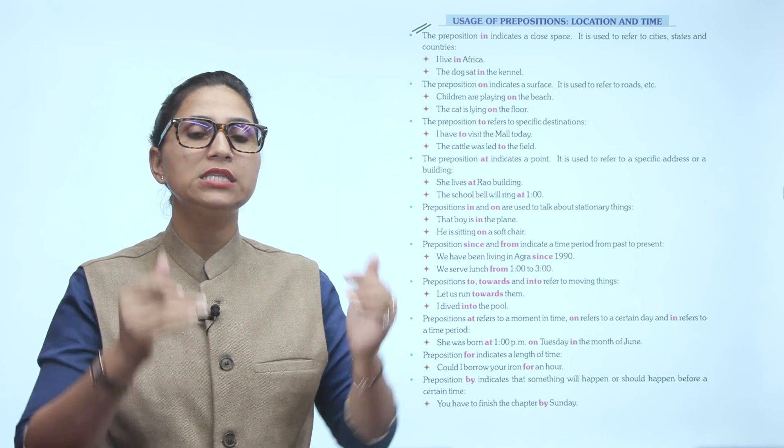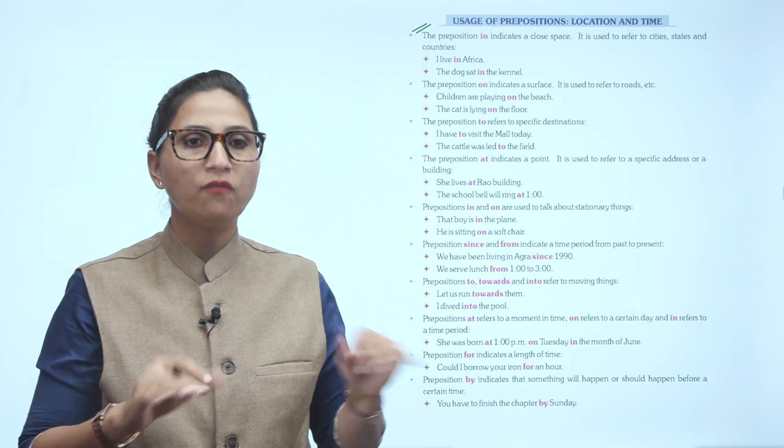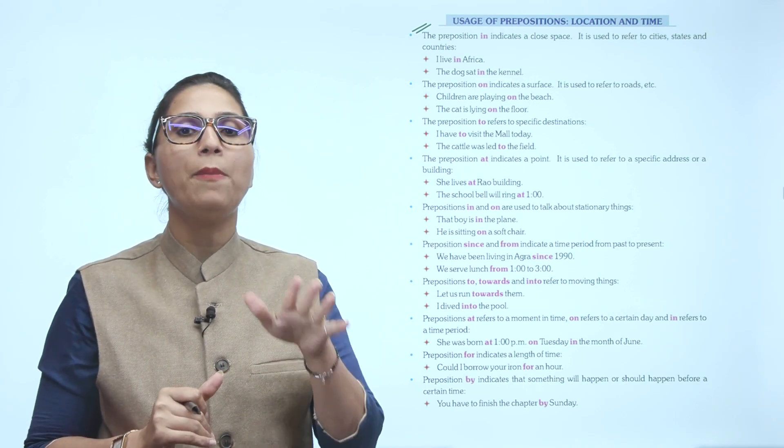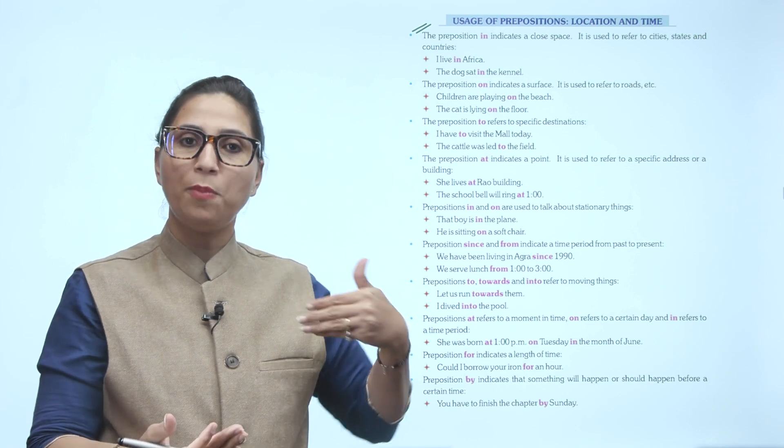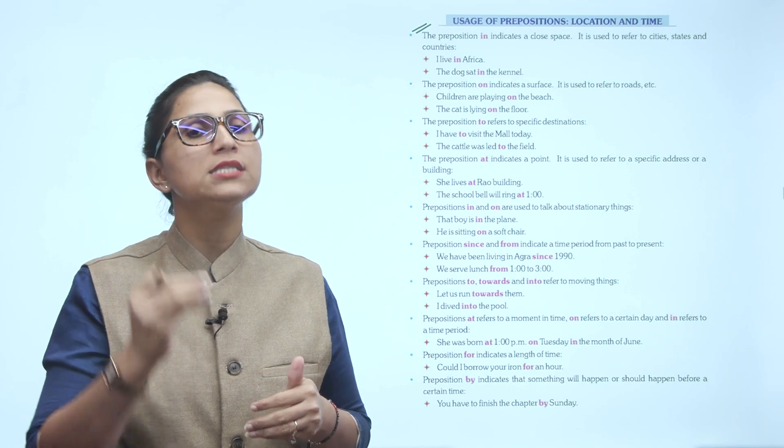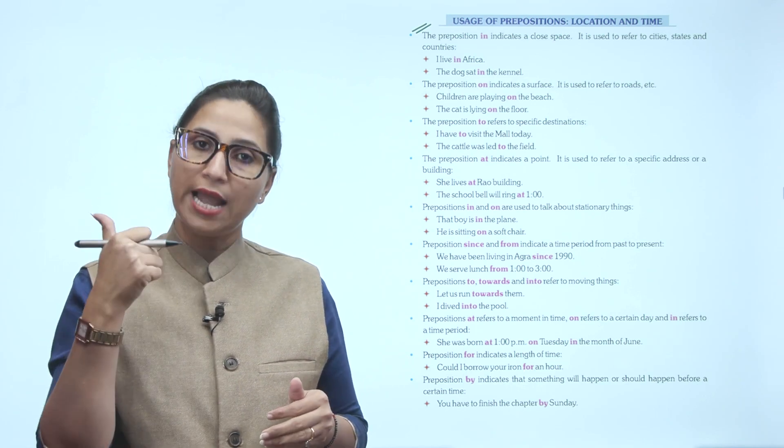Prepositions IN and ON are used to talk about stationary things. That boy is in the plane. He is sitting on a soft chair. Prepositions SINCE and FROM indicate a time period from past to present. So to indicate time from past to present, we use since and from. We have been living in Agra since 1990.